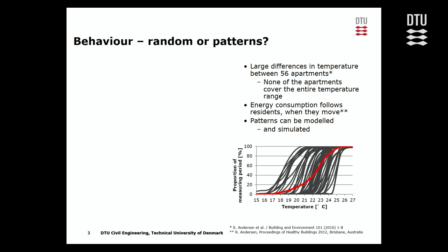What's interesting about this figure is of course the range in temperatures that we see. But it's also interesting that none of the apartments spanned the entire range. Some people liked it warm, some liked it cold, and some were in the middle, but nobody liked it both warm and cold at the same time.